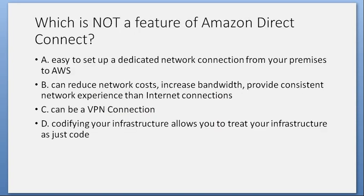Which is not a feature of Amazon Direct Connect? A. Easy to set up a dedicated network connection from your premises to AWS. B. Can reduce network costs, increase bandwidth, provide a more consistent network experience than internet connections. C. Can be a VPN connection. D. Codify your infrastructure, allowing you to treat your infrastructure as just code. Answer: D. Codify your infrastructure — that is not a Direct Connect feature.